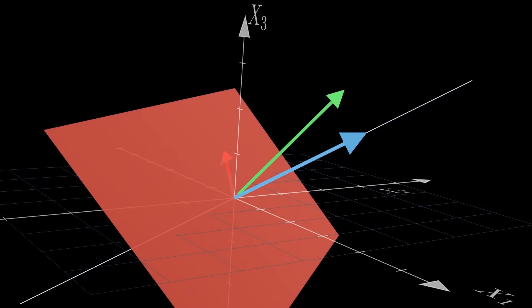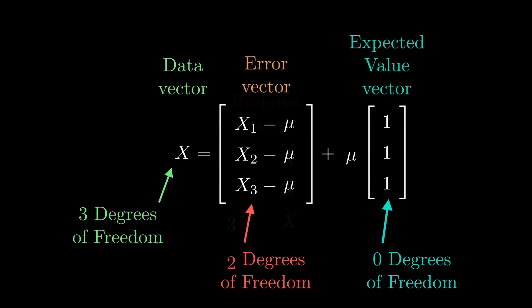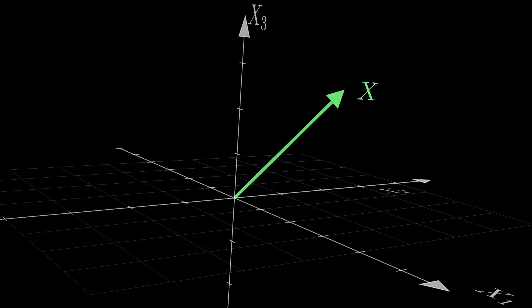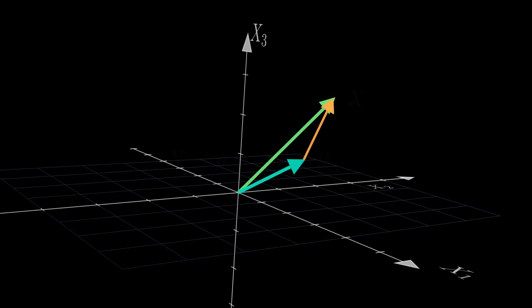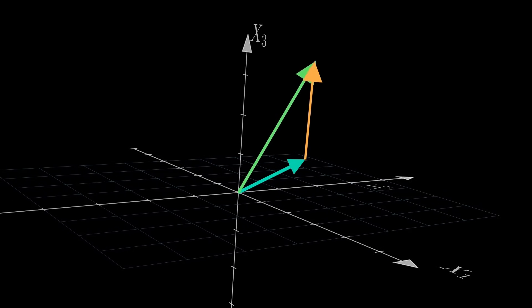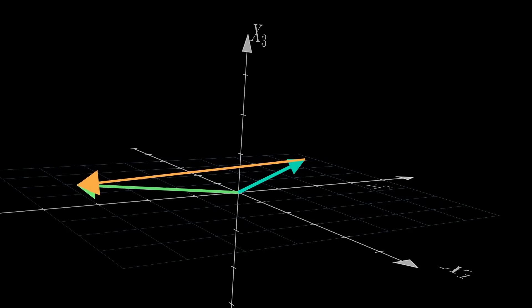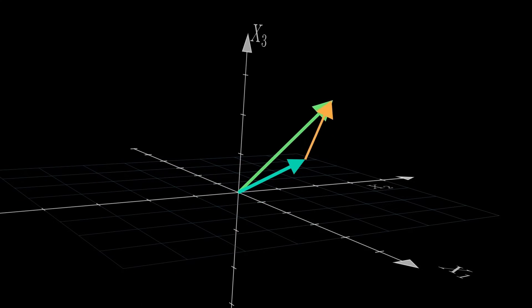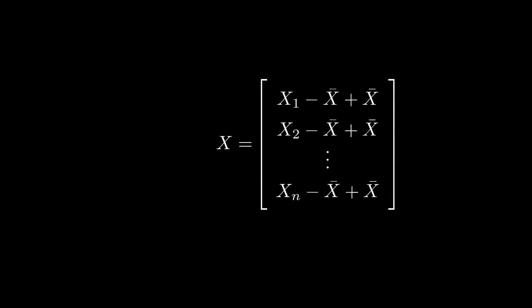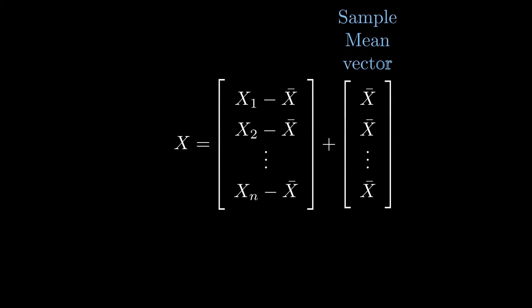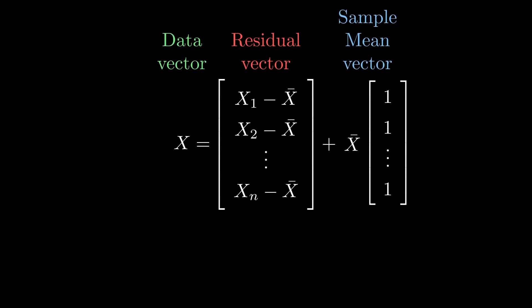So that's our sample mean vector and the residual vector. If we switch to the expected value vector and the error vector, then similarly to before, the expected value is always in the same spot across different samples and so has zero degrees of freedom, which means the error vector could point in any direction and so has three degrees of freedom.